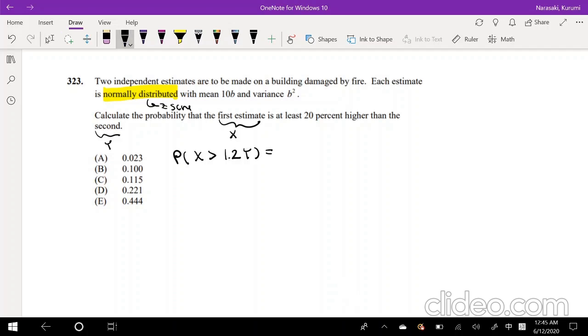So we can also restate this as probably the X minus 1.2Y is greater than 0. And I'm actually going to define a new variable. Let's define this variable to be W. And I'm going to say W is equal to X minus 1.2Y. And in order to find a Z-score, we have to find the mean of W and the standard deviation of W. Okay, so in order to do that, let's write down what we know.